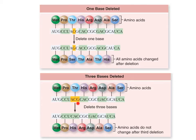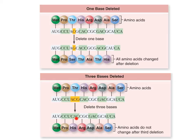On the other hand, if three nucleotides are deleted at the same time, that deletes an entire codon. The effect is that one amino acid is removed, but it doesn't change the amino acids afterwards. So we have the first and second amino acids intact, the third is missing, and we jump right into the fourth. The codons after the deletion are unaffected, so only that one amino acid is absent.